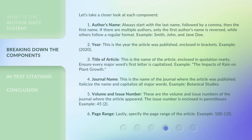Let's take a closer look at each component. 1. Author's name: Always start with the last name, followed by a comma, then the first name. If there are multiple authors, only the first author's name is reversed, while others follow a regular format — for example, Smith, John, and Jane Doe. 2. Year: This is the year the article was published, enclosed in brackets.